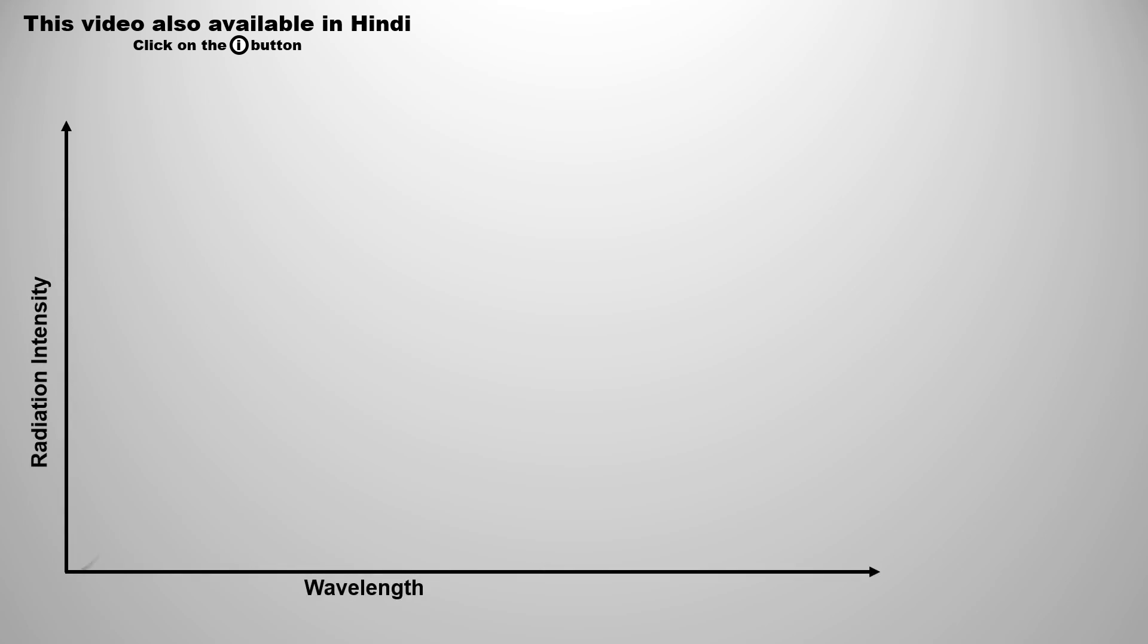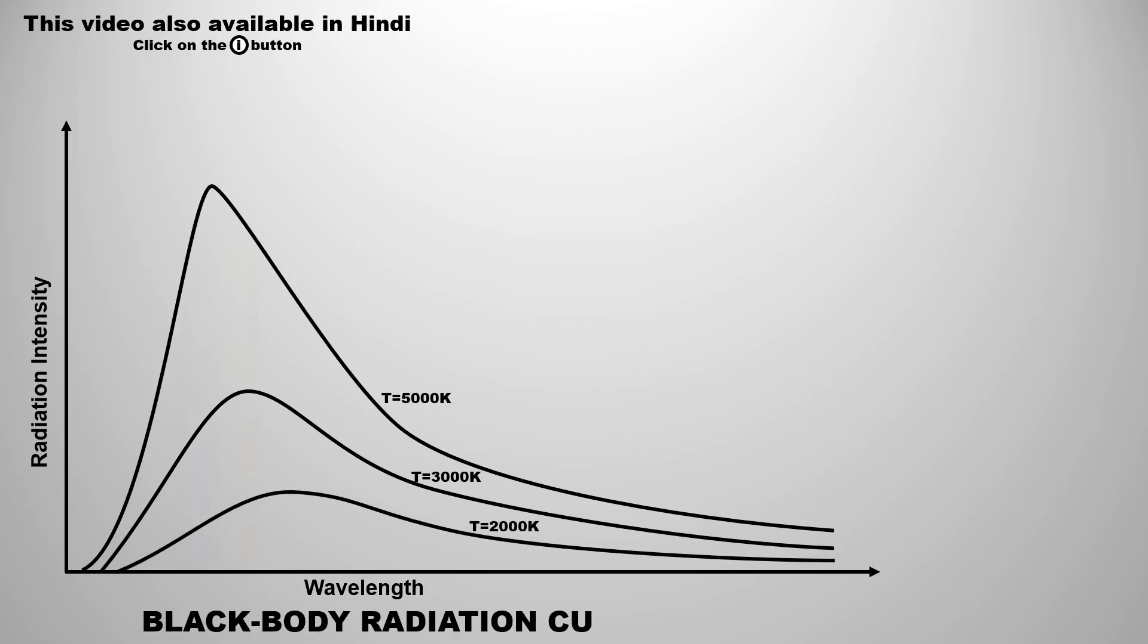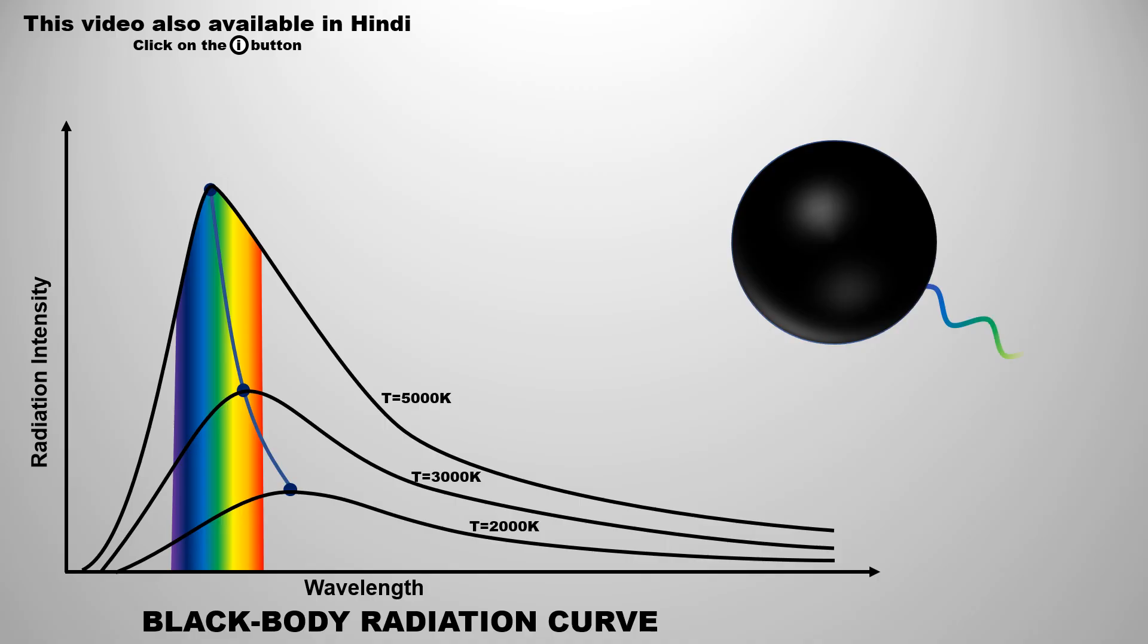In the late 19th century, a puzzle came in front of physics which was difficult to answer. This puzzle was of black body radiation curve. When an object emits radiation due to its internal temperature, the object is called black body and that radiation is called black body radiation.